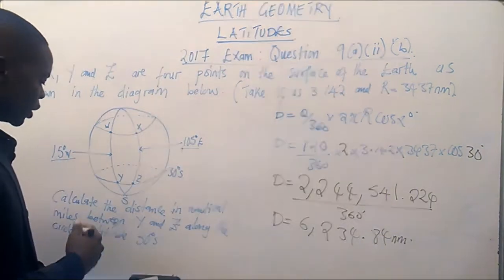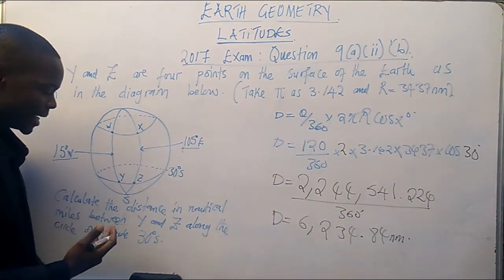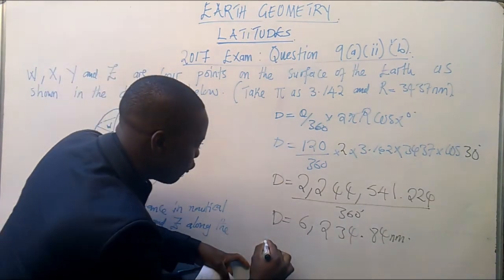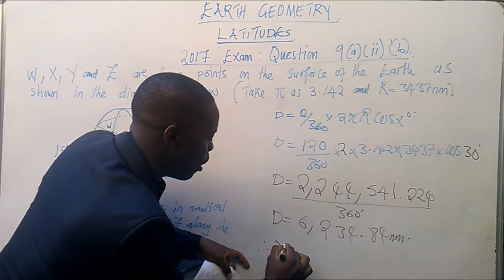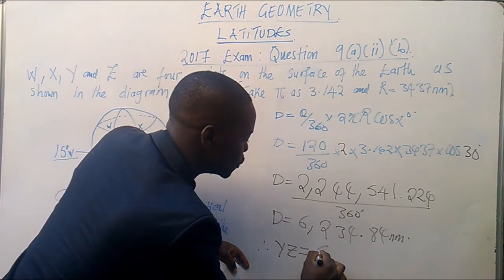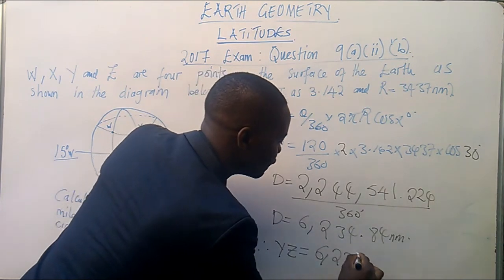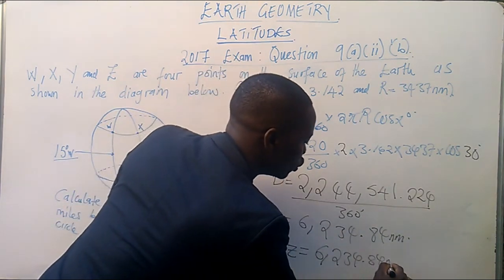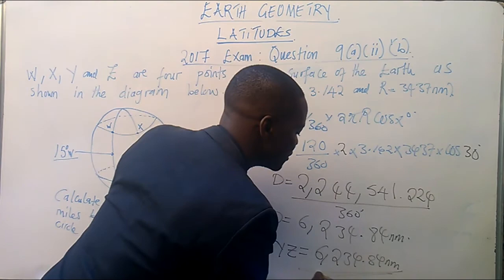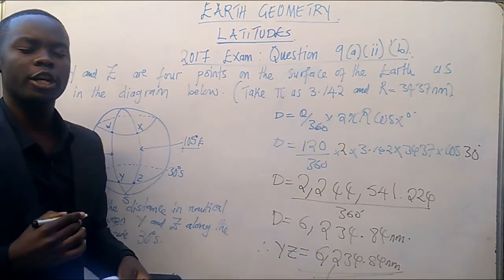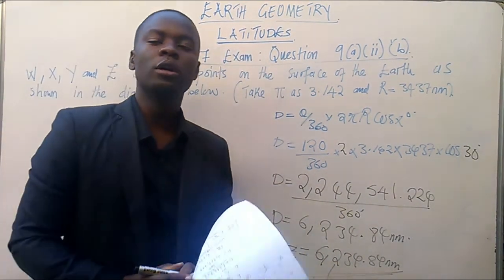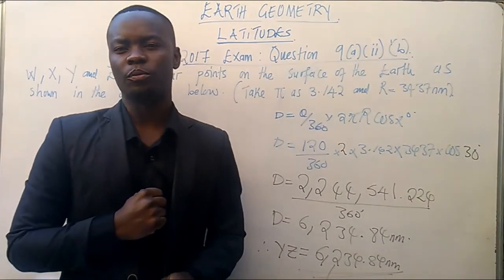Now, since the question is saying the distance YZ, therefore, I'm going to say, therefore, YZ is equal to 6,234.84 nautical miles. Now, very, very simple way of calculating the distance along the latitude. Hope you have enjoyed this video.